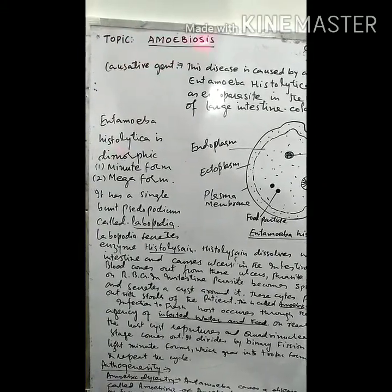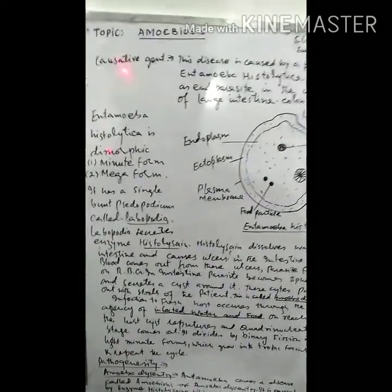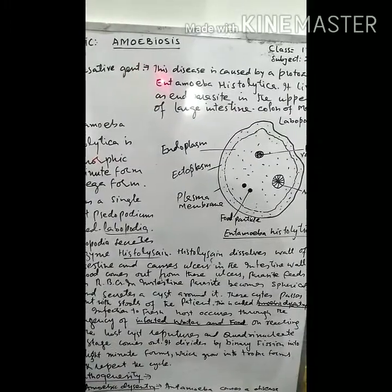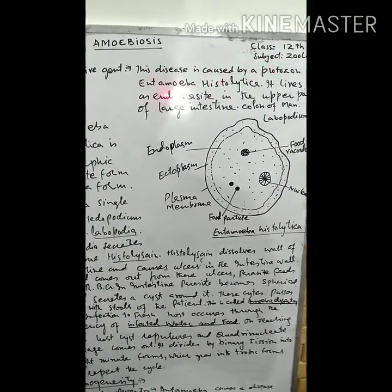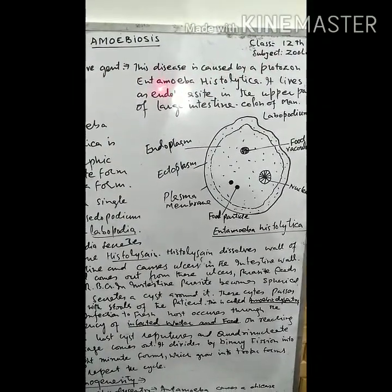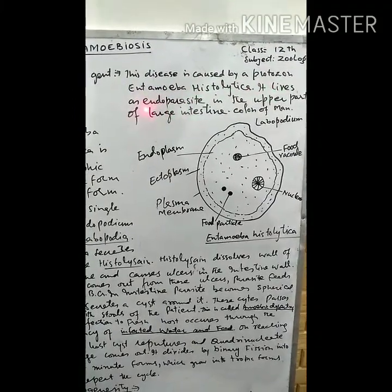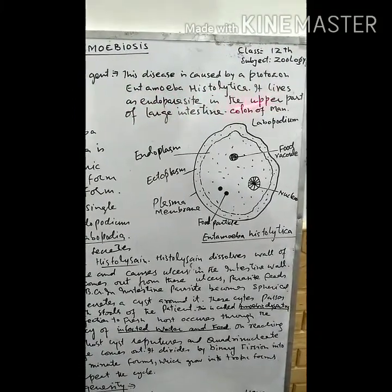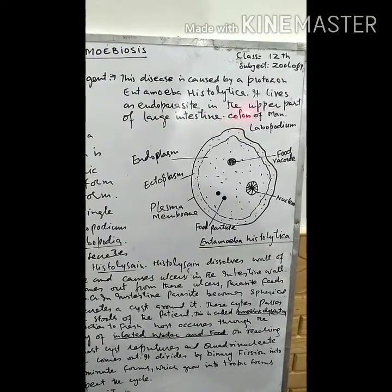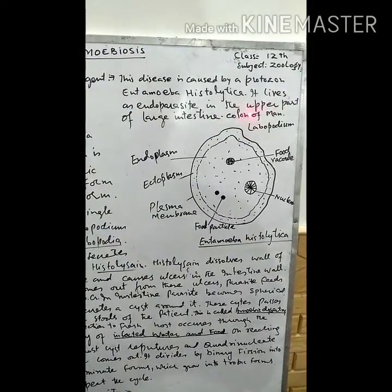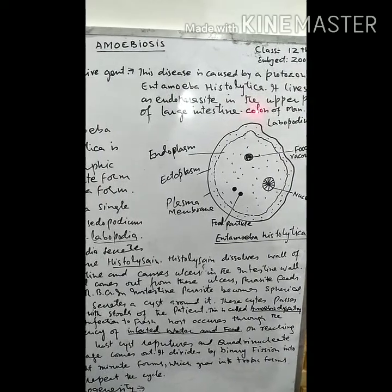Today my topic is amoebiasis. The causative agent of amoebiasis is Entamoeba histolytica. This disease is caused by a protozoan called Entamoeba histolytica. It lives as an endoparasite in the upper part of the large intestine, or colon, of man.